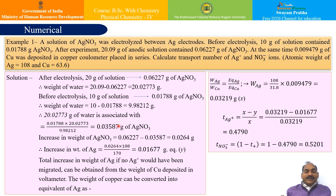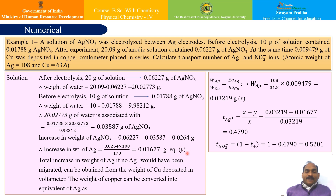The increase in weight of silver nitrate is 0.06227 − 0.03587 = 0.0264 grams. The increase in weight of silver is then calculated as 0.0264 × 108 / 170, which equals 0.01677 grams. Let us call this Y.